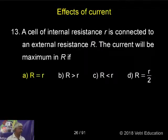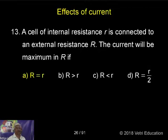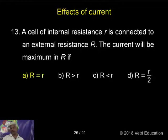A cell of internal resistance R is connected to an external resistance R. The current will be maximum when R is equal to R — that is, when internal resistance equals external resistance, only then the current will be maximum.